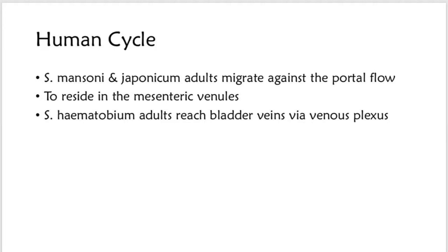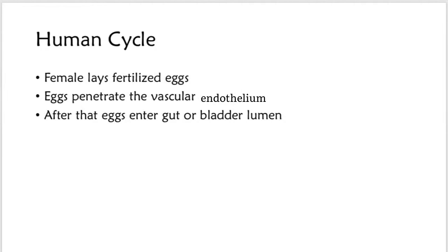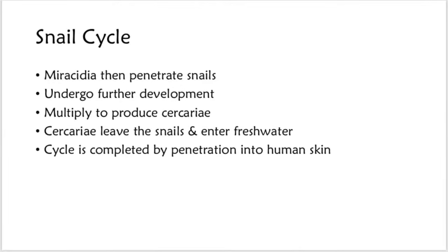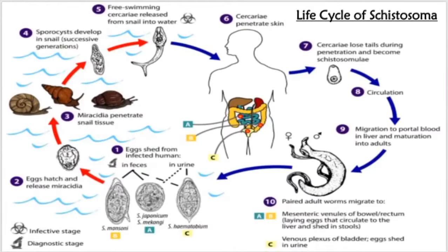S. haematobium adults reach the bladder veins through venous connections between the rectum and the bladder. In their definitive venous site, the female lays fertilized eggs which penetrate the vascular endothelium and enter the gut or bladder lumen. The eggs are excreted in feces or urine and must enter fresh water, where they release ciliated swimming larvae called miracidia. Miracidia then penetrate snails and undergo further development and multiplication to produce many cercariae. The three schistosomes use different species of snails as intermediate hosts. Cercariae leave the snail, enter fresh water, and complete the cycle by penetrating human skin.